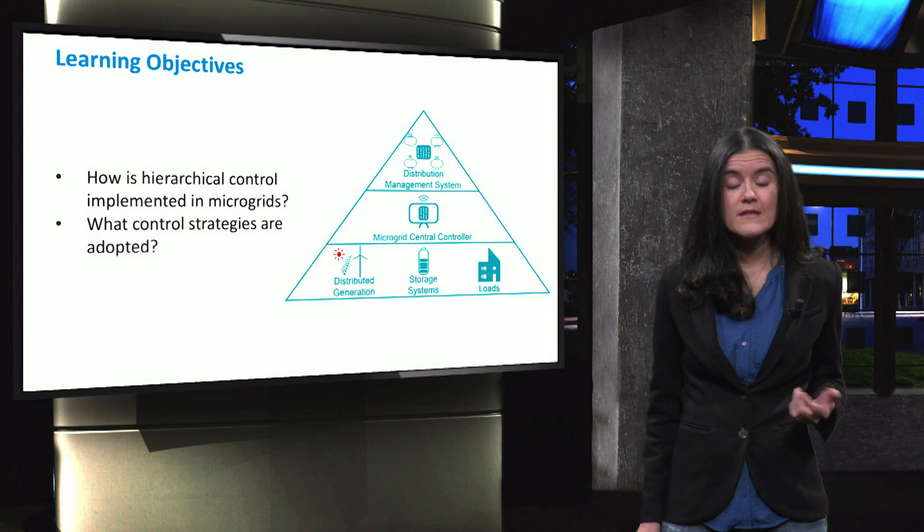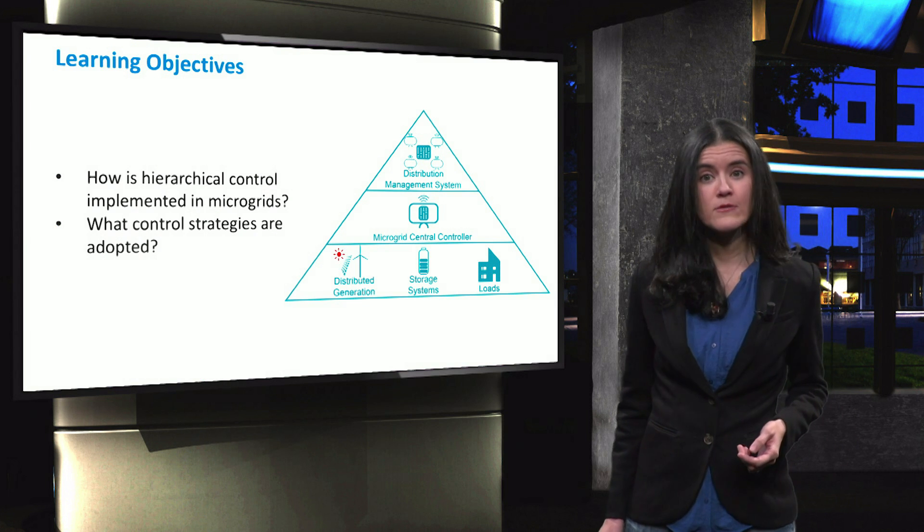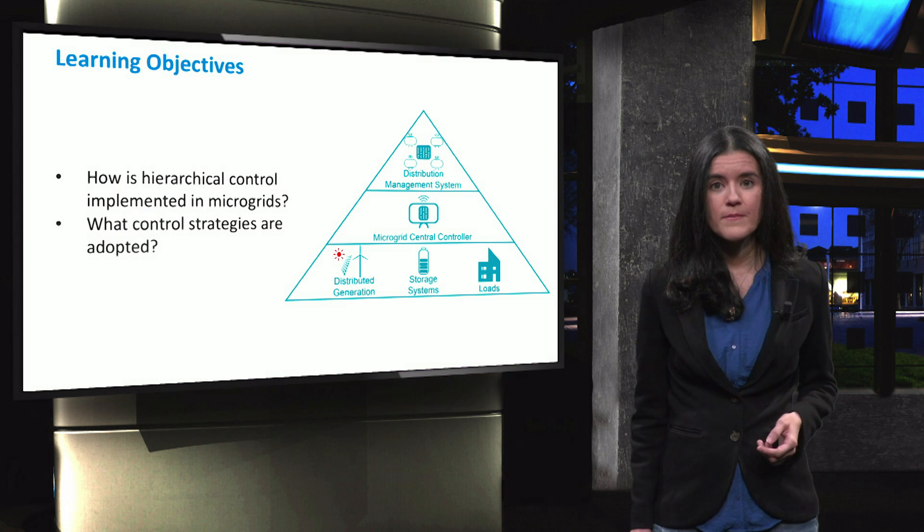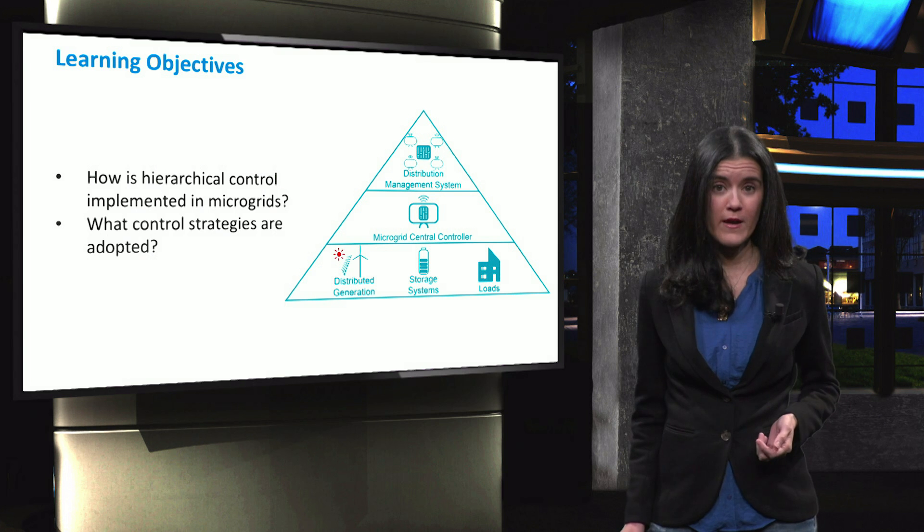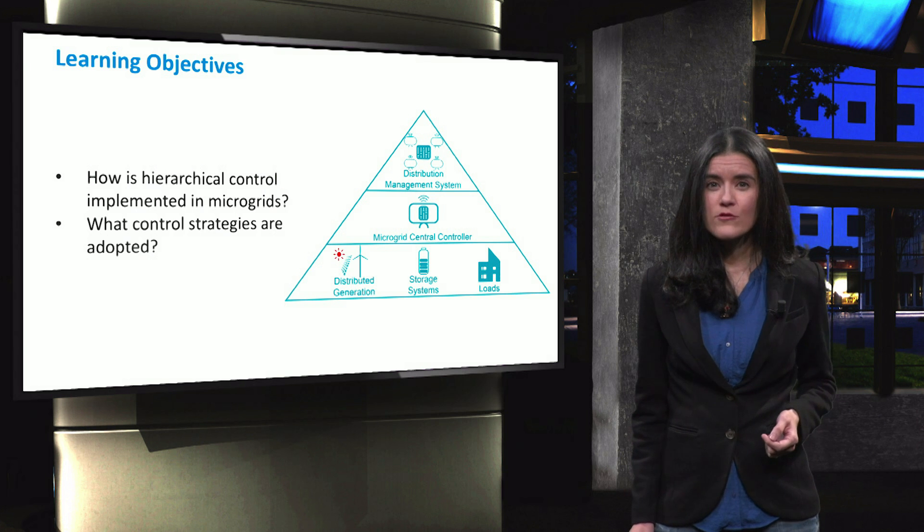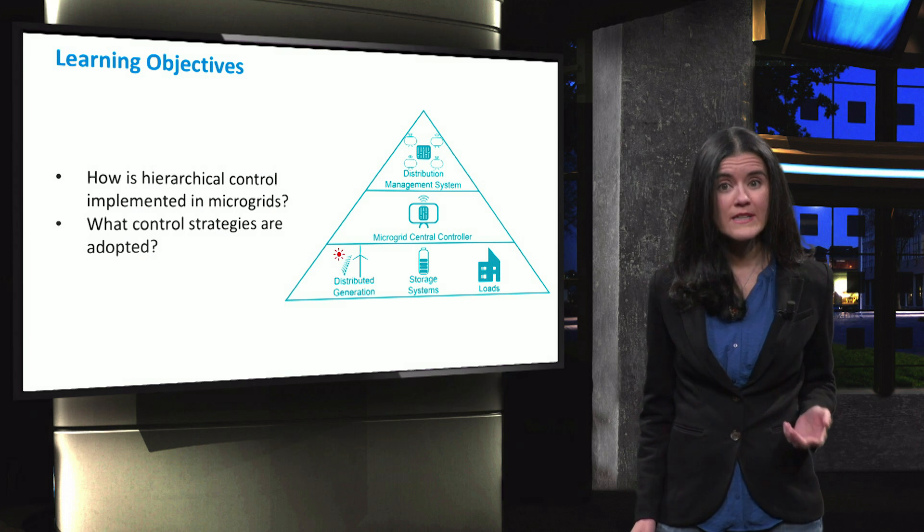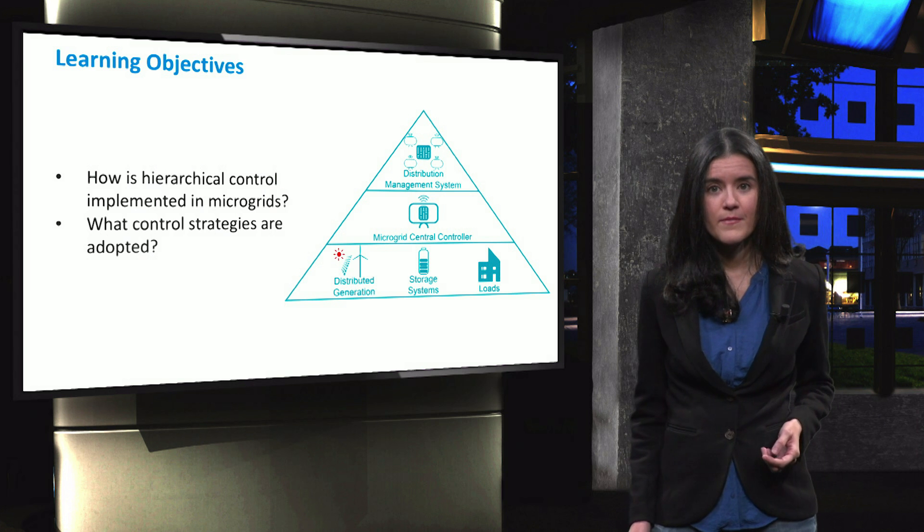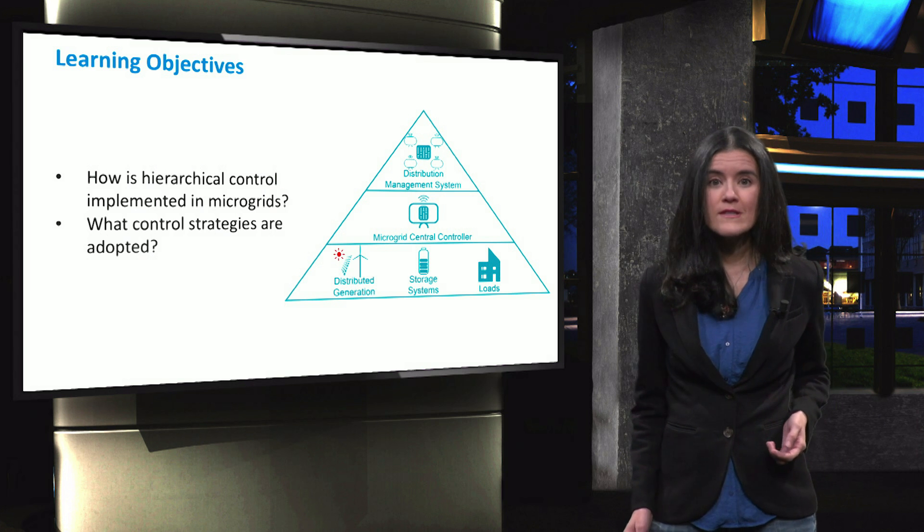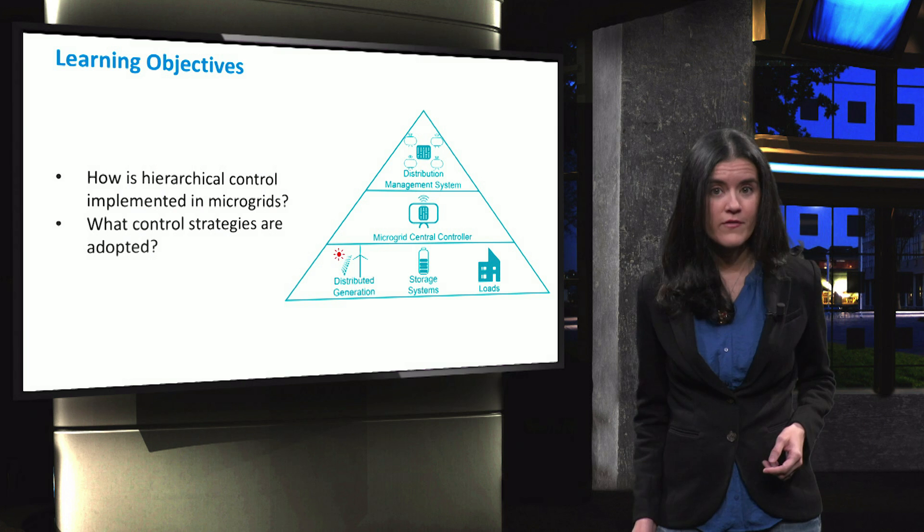You will learn what is the role of local, internal and upstream control in microgrids and how these three levels are combined in the hierarchical way. Then, we will address different control strategies that are generally implemented in microgrids. Among them, we are going to distinguish between grid-forming and grid-feeding strategies.